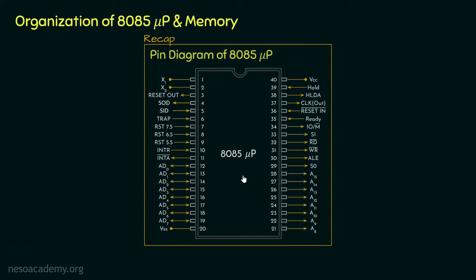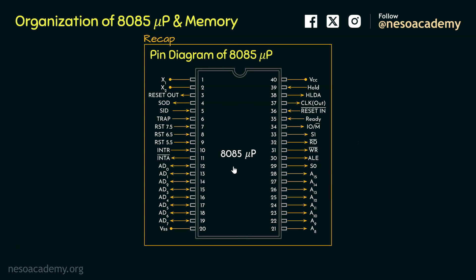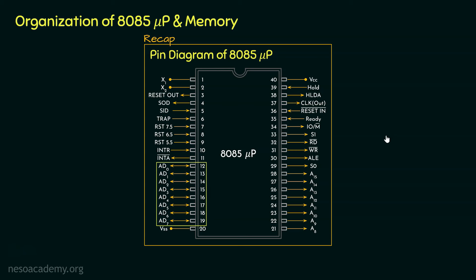We already have seen all 40 pins of the 8085 microprocessor. Since we are about to learn about data transfer, the data bus is a must — that is pins 12 to 19, from AD0 to AD7. Apart from that, to communicate with memory and access memory locations we will need the address bus. We have already included pins 12 to 19 for the lower order address bus, but we will also need the higher order address bus — that is pins 21 to 28, or A8 to A15.